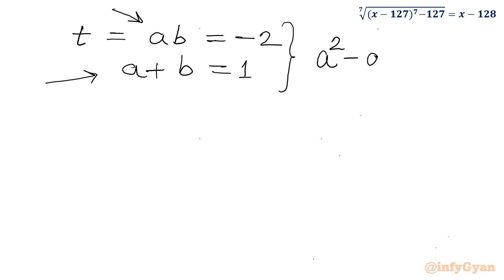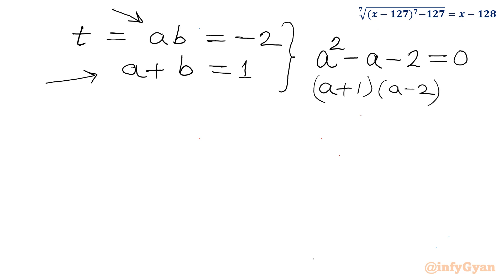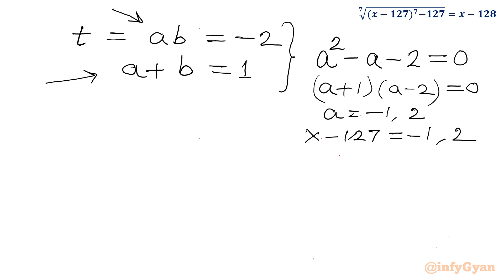Factorizing: (a plus 1)(a minus 2) equals 0, giving a equal to negative 1 and a equal to 2. Since a was our substitution x minus 127, we have x minus 127 equal to negative 1, giving x equal to 126, and x minus 127 equal to 2, giving x equal to 129. There are two real values for which this equation holds true.